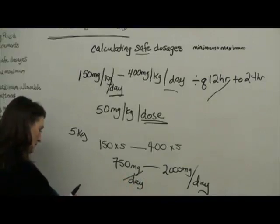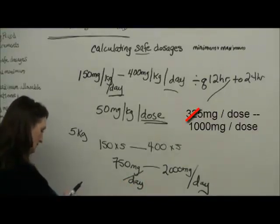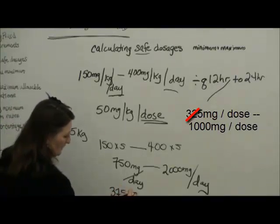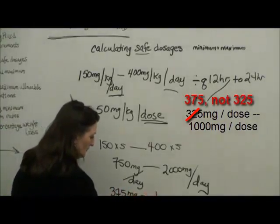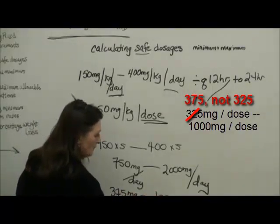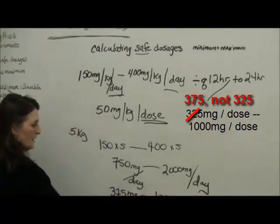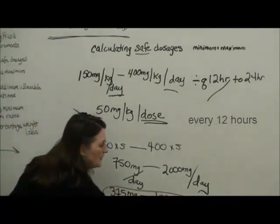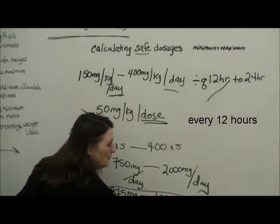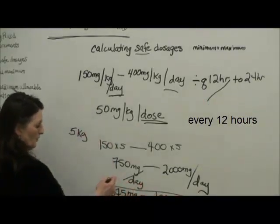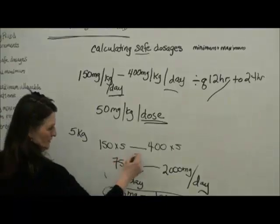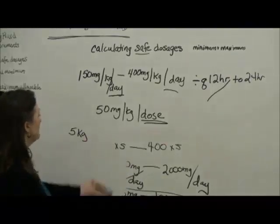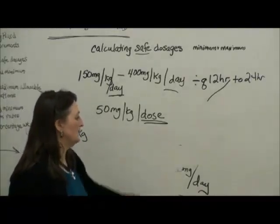So 750 divided by two, we would say that this patient's safe dosage is between 375 milligrams to a thousand milligrams, because we are going to give that twice because it's every 12 hours, and we know in 24 hours based on our reference this would be our total daily dose.